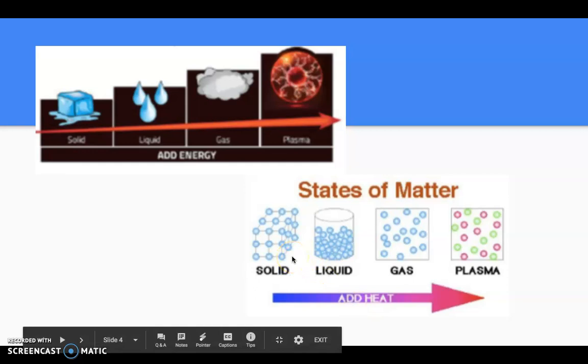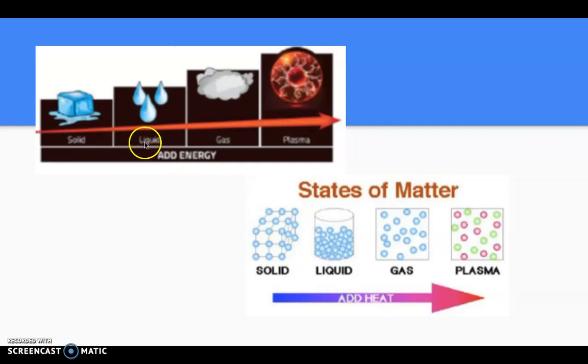When you add heat to matter, the particles start to speed up and that causes them to have more energy. For example, a solid has less energy than liquid. However, plasma has more energy than liquid.